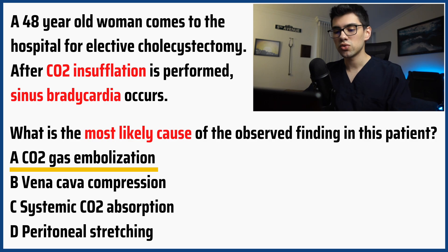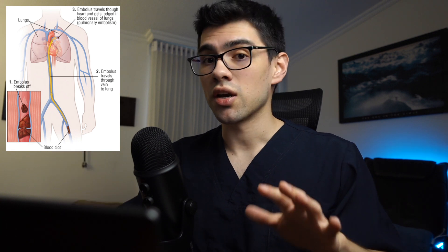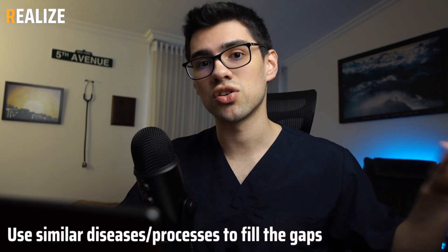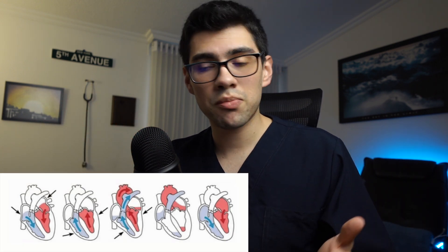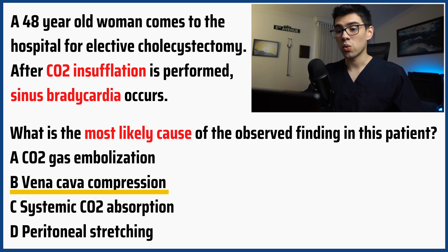All you have to do is ask yourself those two questions with each choice. First choice: CO2 embolization. What do I know about CO2 embolization? I don't know about that topic specifically, but I do know about pulmonary embolization, and I'm sure that when a patient gets a PE, he gets tachycardic, not bradycardic. So probably this is not the correct choice, since another type of similar embolization causes the opposite — ruled out. Second choice: vena cava compression. I know the vena cava carries blood to the heart, and if it gets compressed, less blood gets to the heart. Less preload means less cardiac output, and the heart tries at all costs to maintain cardiac output — the easiest way being to increase heart rate. So would it make sense for the heart to become bradycardic when cardiac output drops? No — ruled out.